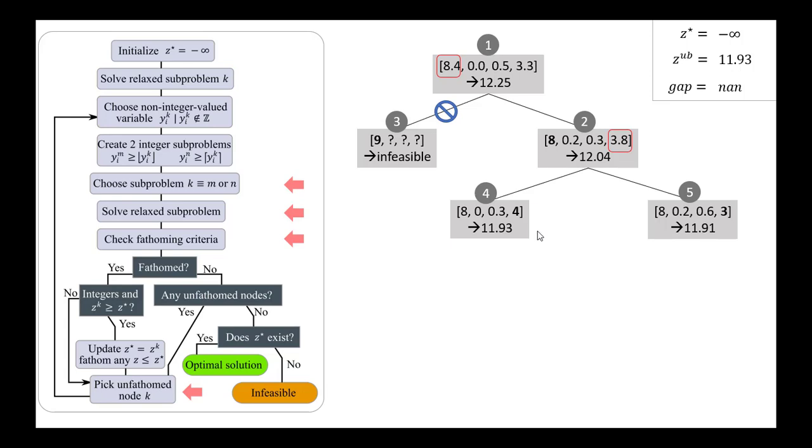So we just pick any unfathomed node, and I guess we'll move forward picking node 5. And then we create two subproblems. Now we're going to choose the x3 variable to bound, and we do that by, again, maintaining constraints that we've already introduced, but adding this additional constraint on x3.